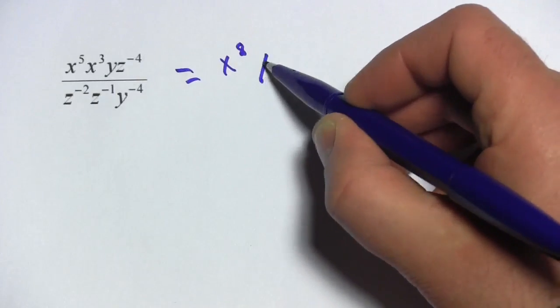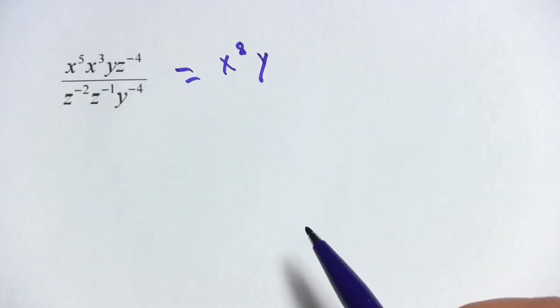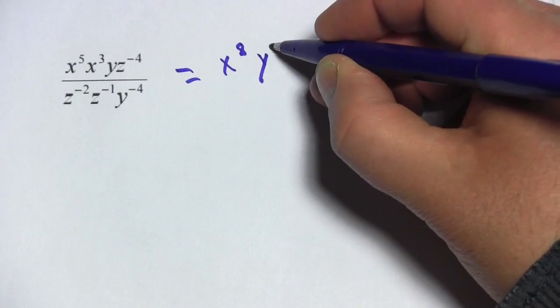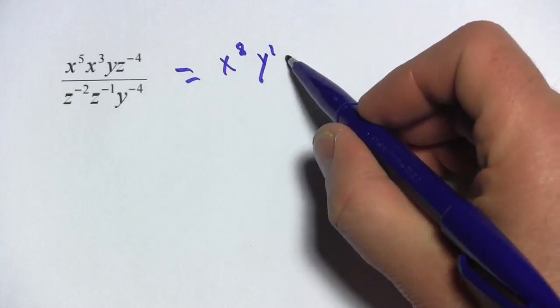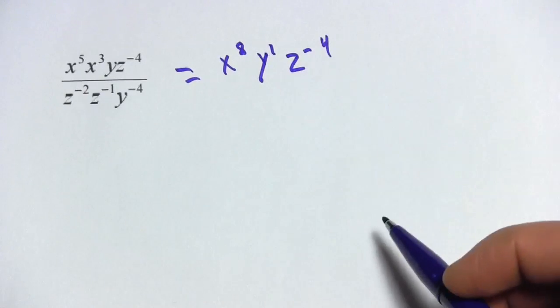I can't do anything with the y up here. That's just y. There's no exponent. I think I'm going to write in a 1 because this will help me remember that this is to the first power. And then I've got z to the negative fourth. Okay, so that's the top.